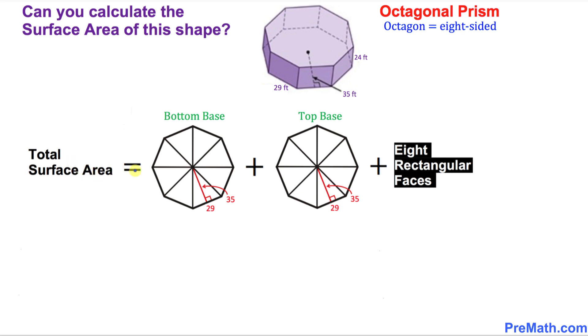The total surface area is going to be this first octagon, which represents the bottom part of this shape. The second one, this octagon, represents the top part. That means the lid.